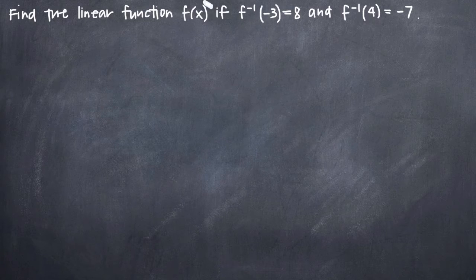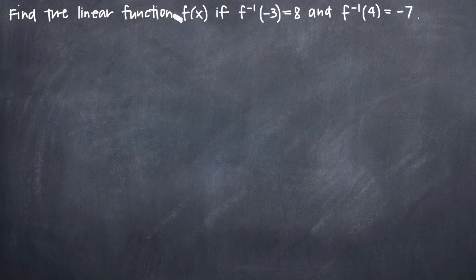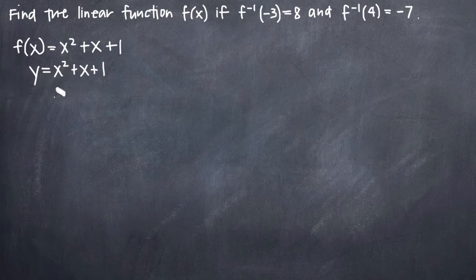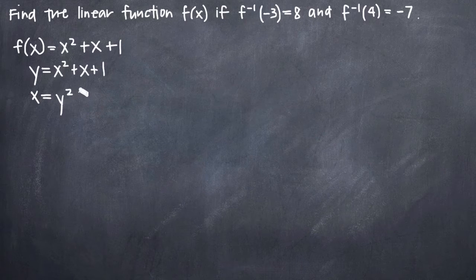What we need to recognize is that when we're talking about inverse functions — f to the negative 1 of x being the inverse function of f of x — an inverse function is the same as the original function except with the x and y variables flipped. So if our original function is f of x equals x squared plus x plus 1, we can say this is essentially y equals x squared plus x plus 1. The inverse function would be where we flip the variables: x equals y squared plus y plus 1. So we're just talking about flip-flopping the variables.